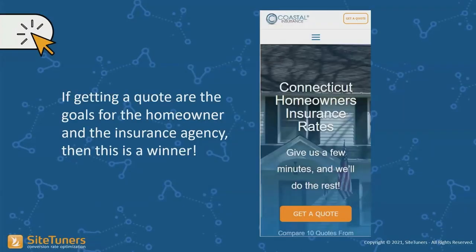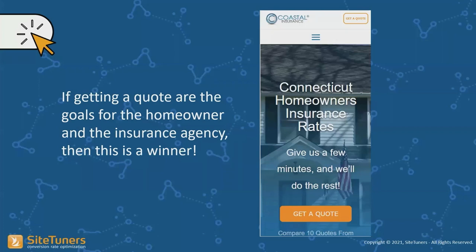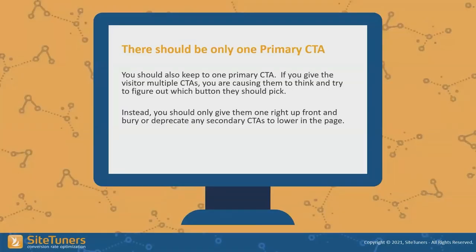On the other hand, here's a high-converting site we designed — a homeowners insurance page in Connecticut. 'Get a quote' — it solves the problem for the homeowner and for the agency. This is a long-form SEO page, and the same call to action repeats two more times further down: once early, once after all the SEO text. It answers all three questions: 'Am I in the right place?', 'How do I feel about this?', and 'What am I supposed to do here?' Simple and effective.